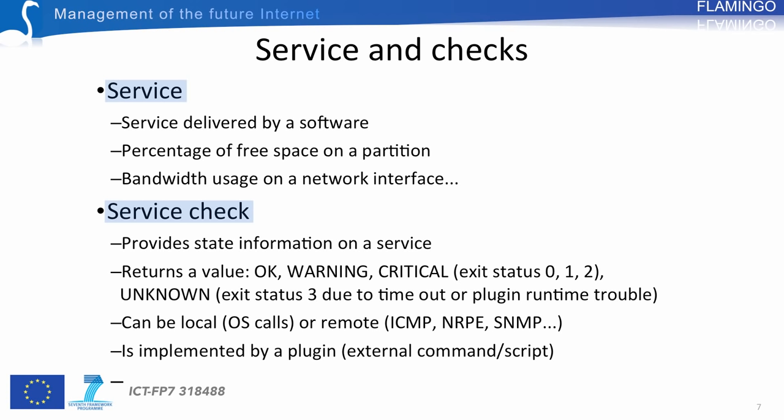There is also an unknown state corresponding to exit status 3, indicating a plugin timeout or plugin execution trouble. This value reflects Nagios's view about the service. Checks can be locally executed using OS calls, or remotely using network protocols, the NRPE agent, or SNMP agents.